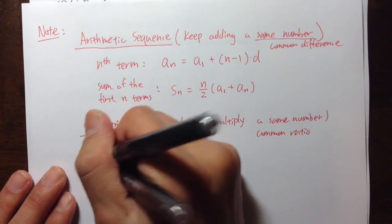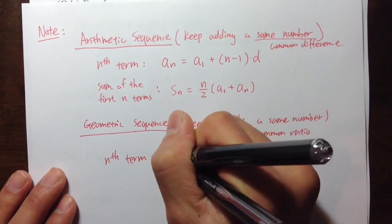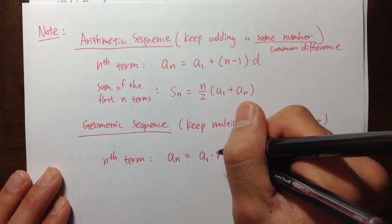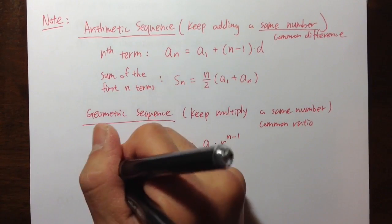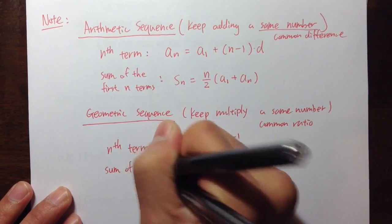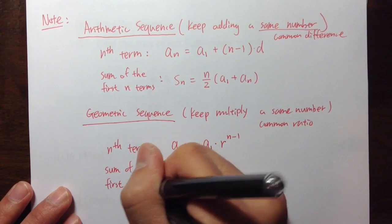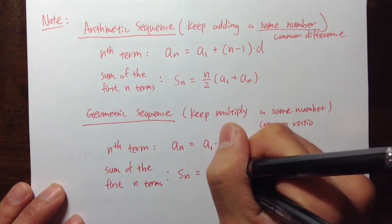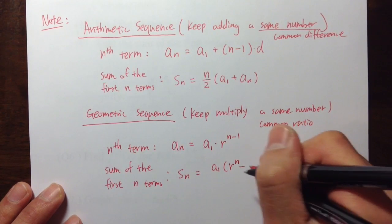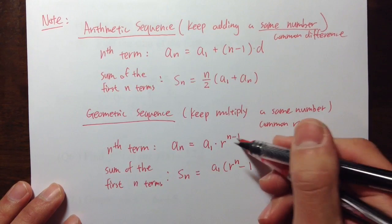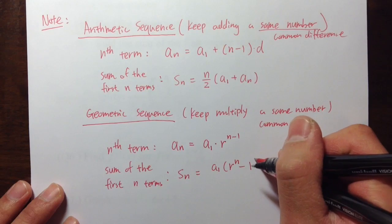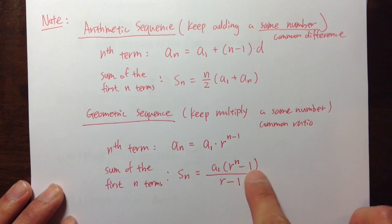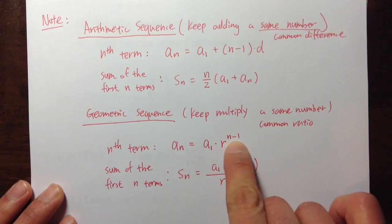We still need to know how to find the nth term of the geometric sequence. It's given by the formula: a_n equals a_1 times r, the common ratio, raised to the n minus 1 power. We also have the sum of the first n terms, given by: S_n equals a_1 times (r^n minus 1), over (r minus 1). The minus 1 in the numerator and denominator are regular subtraction — not exponents — but the entire n minus 1 in the nth term formula is in the exponent.